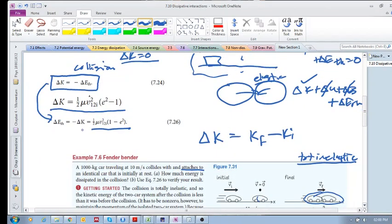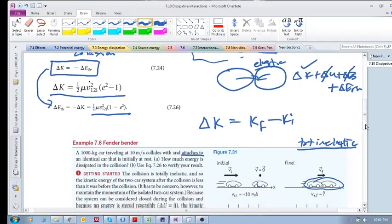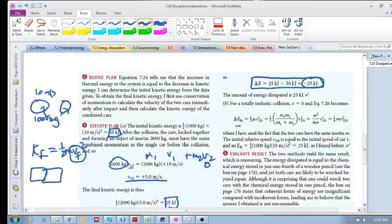Now if we look at this equation, we can also use this equation to validate, because it says use equation 7.26 to verify your results. We just calculated this because we were able to find the initial and final kinetic energies. Another way is to use this equation where that is your reduced inertia. Let's have a look at how they calculate it.